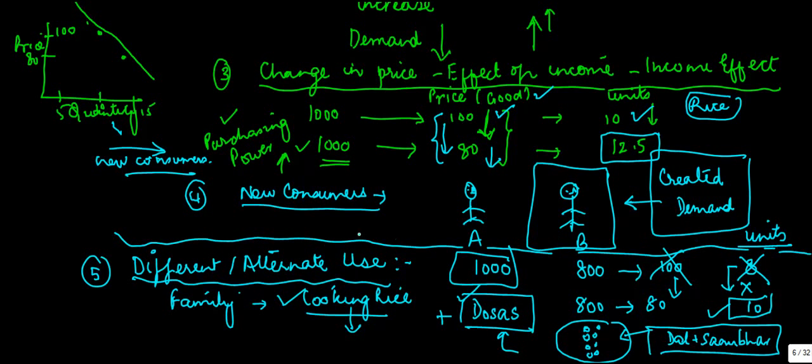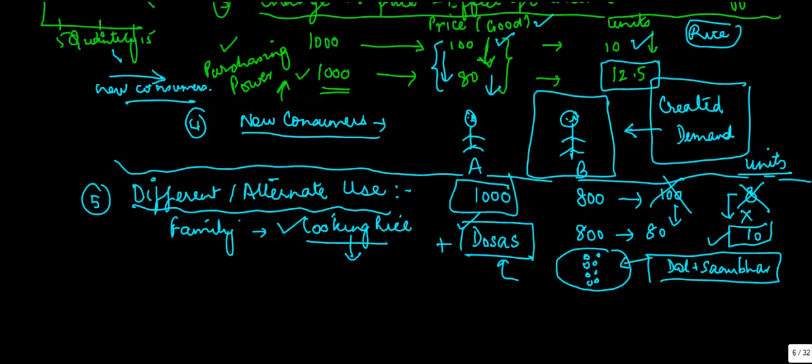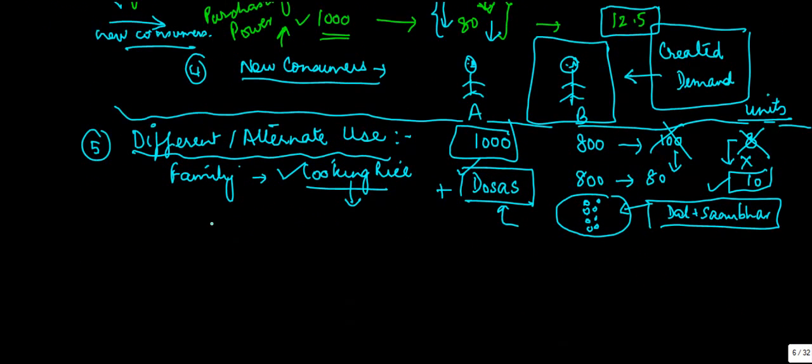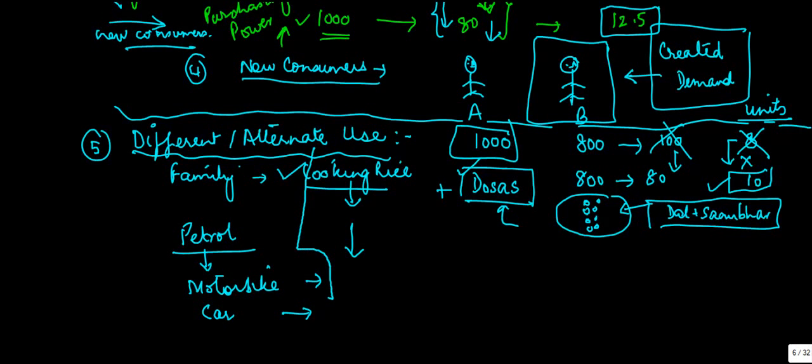Similar is the case for some other products. Let's take the case of petrol. Normally a guy was using a motorbike because that's the one which uses minimum amount of petrol. As the price of petrol went down, he decided maybe I'll use some part of it for car as well. So there were alternate uses which are being put for petrol as the price went down and therefore the total demanded quantity increased.